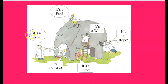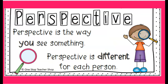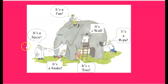This person right here thinks that it's a spear because he's looking at just the trunk. This one thinks it's a snake because it's just looking at its nose. That's the perspective. The perspective is the way you see something, and perspective is different for each person.